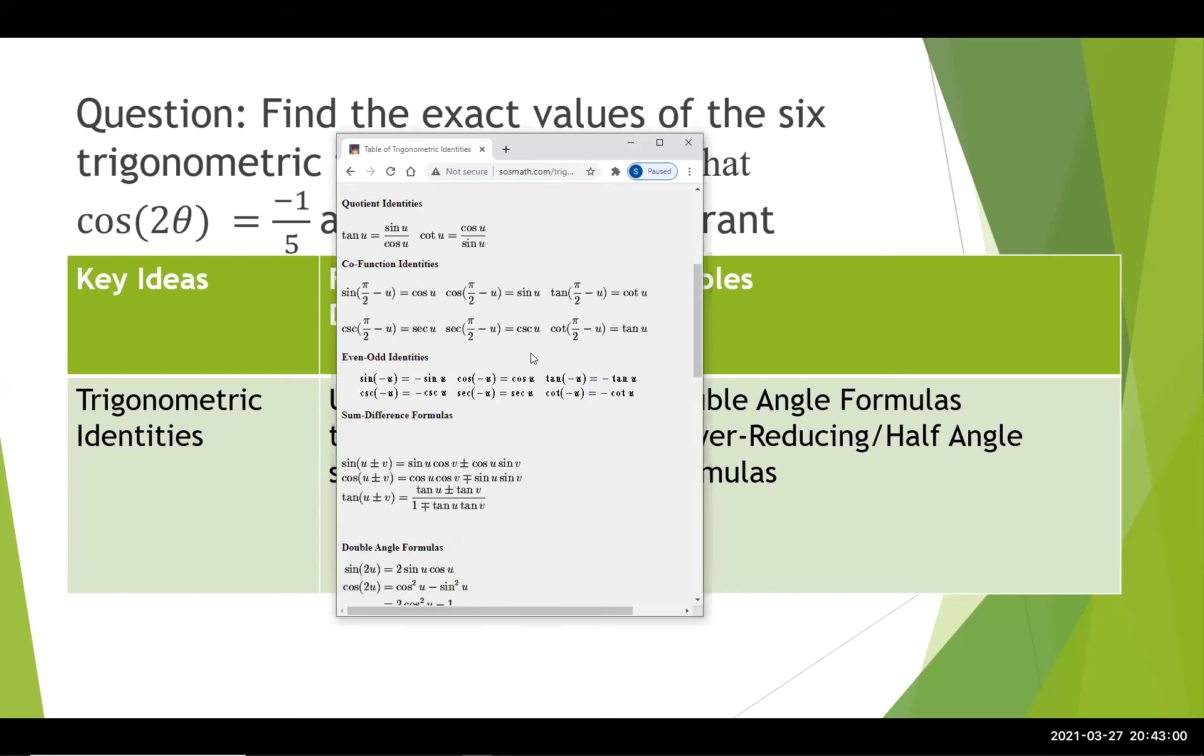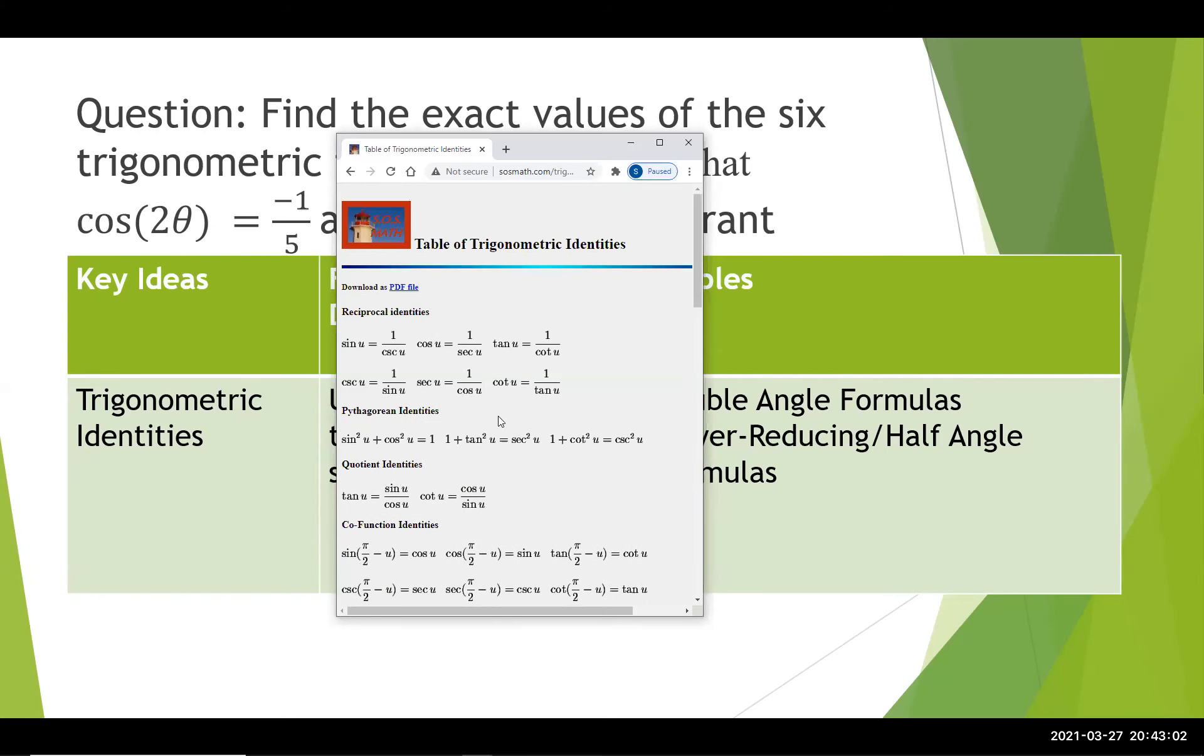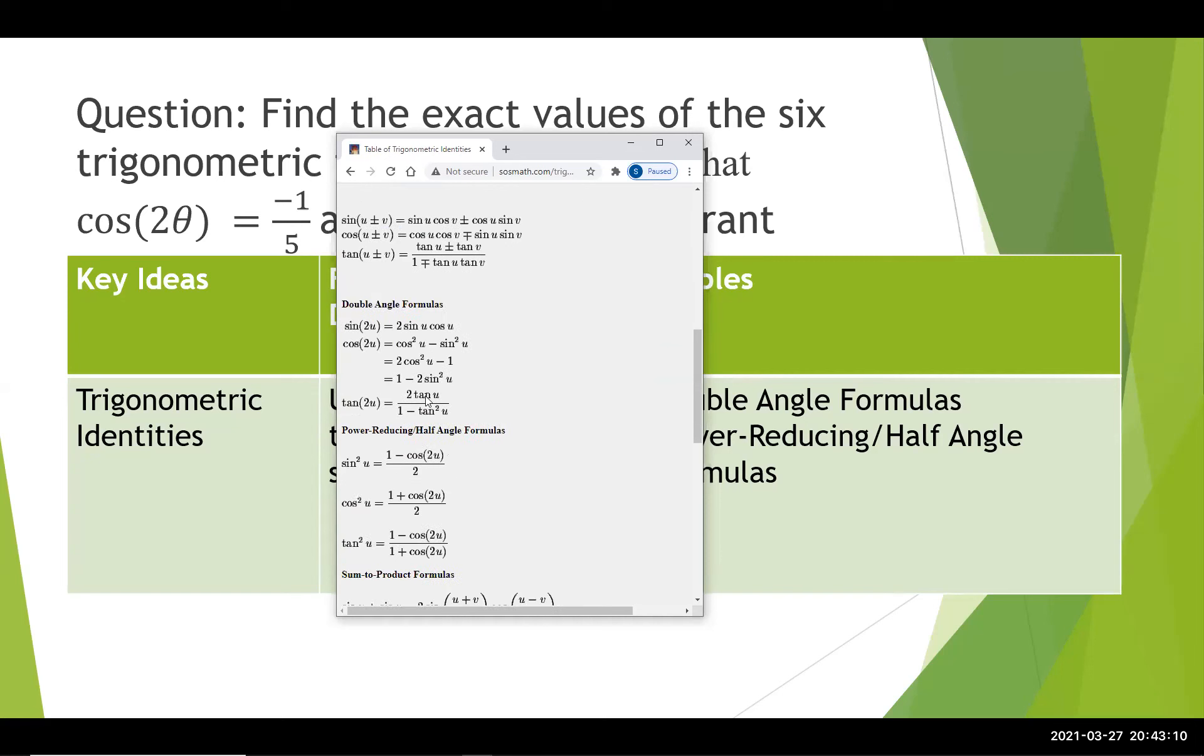So here is the trigonometric identity sheet. And we're going to skim through it and look for that 2 theta. Notice here we've got just a theta by itself. We keep going down though, right here. These double angles have it, and we're given a cosine of 2 theta, so we need to use one of these.